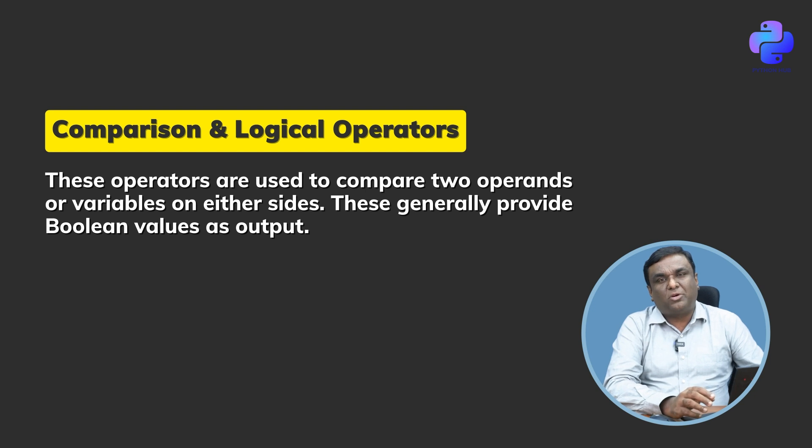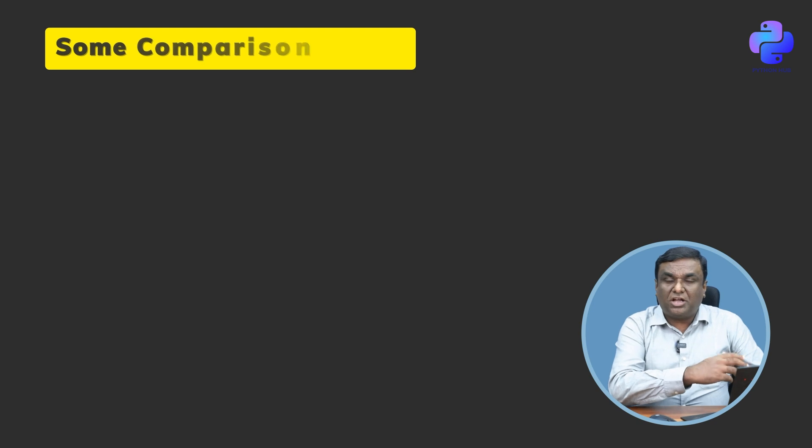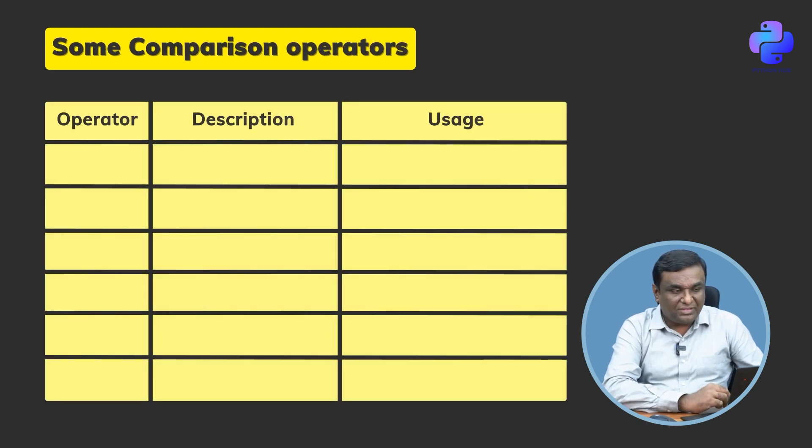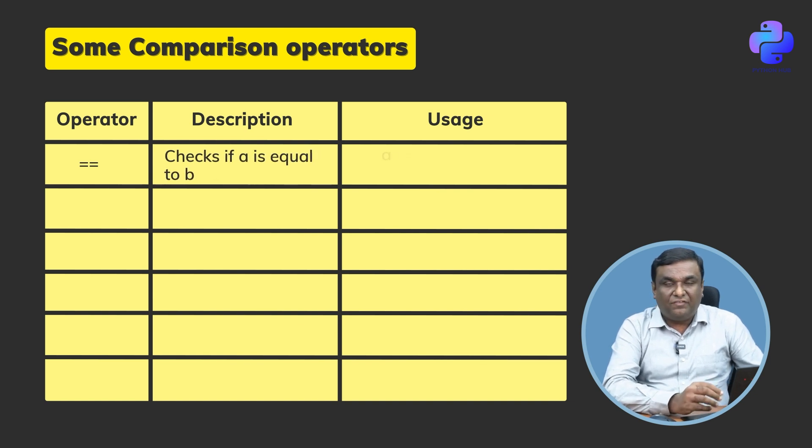Comparison operators are used in different coding projects primarily to check whether values are matching or not. Some of the comparison operators are double equal to, which checks whether a is equal to b. If a double equal to b returns true, that means a is equal to b.